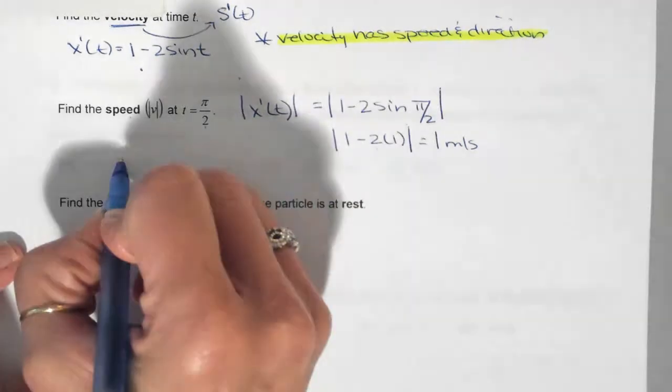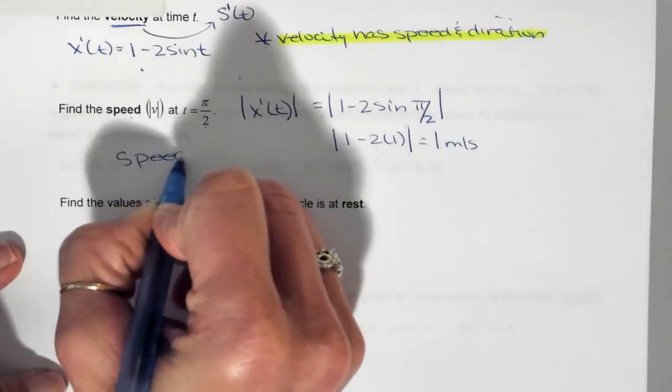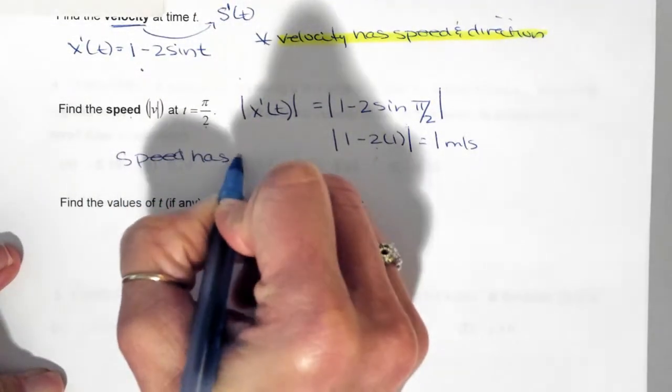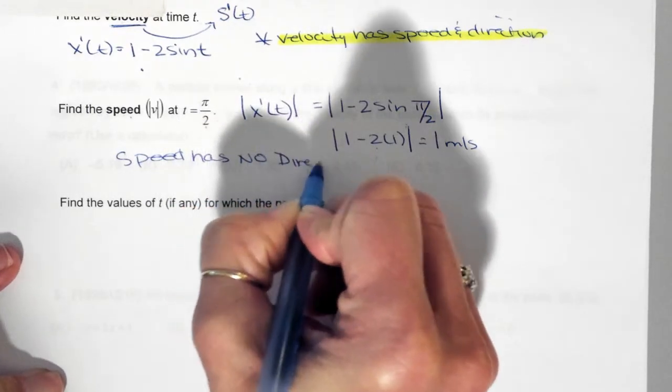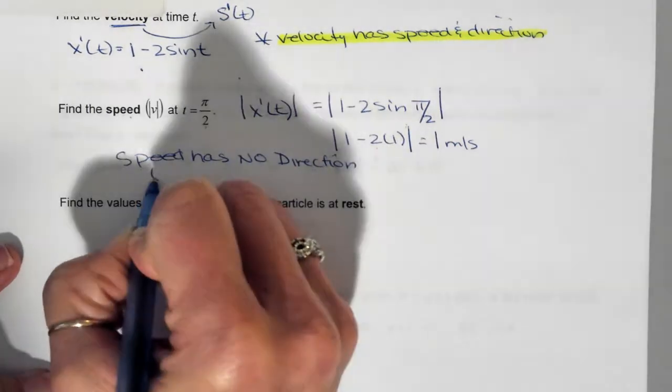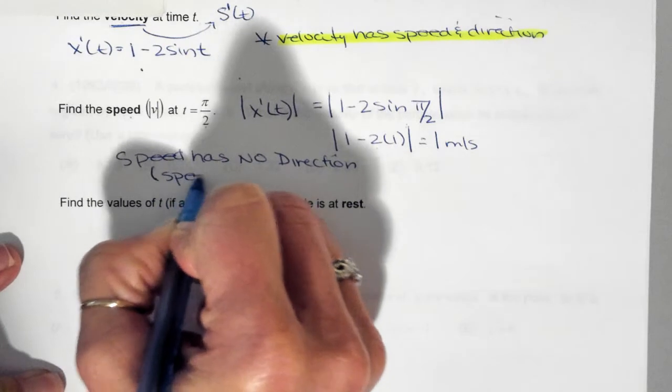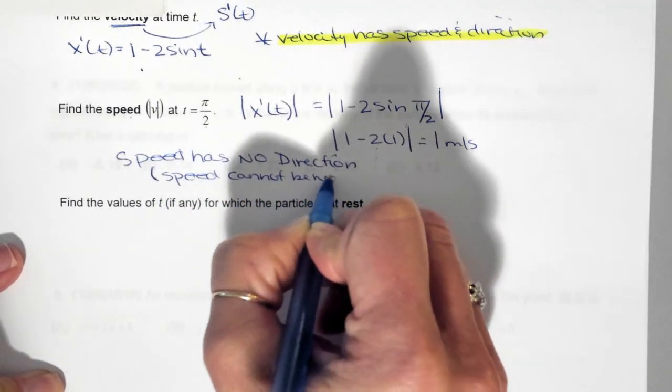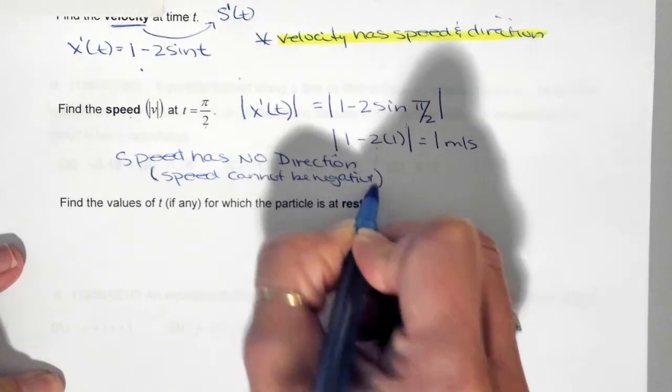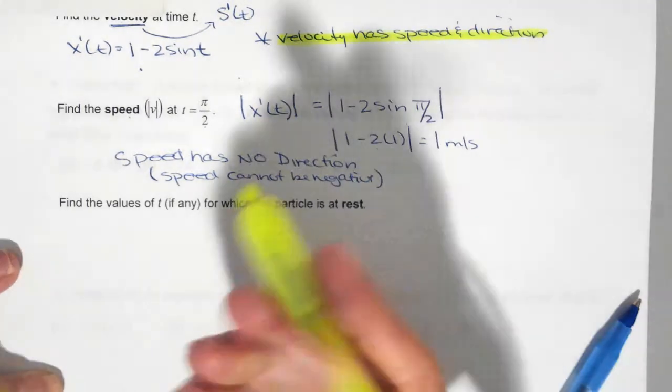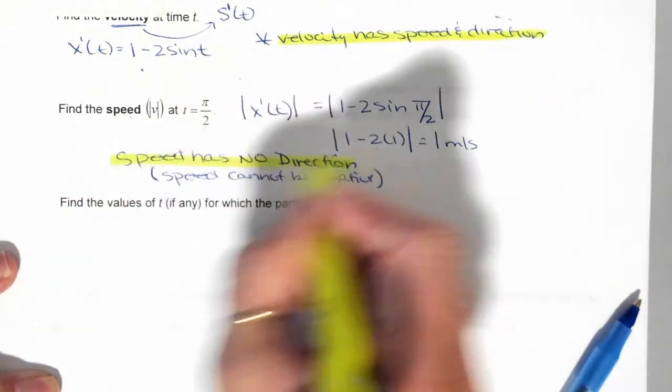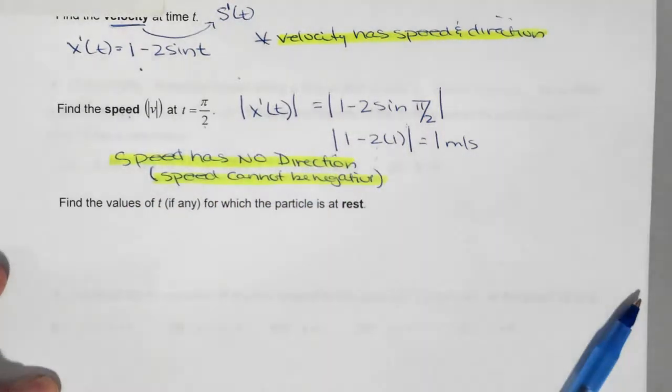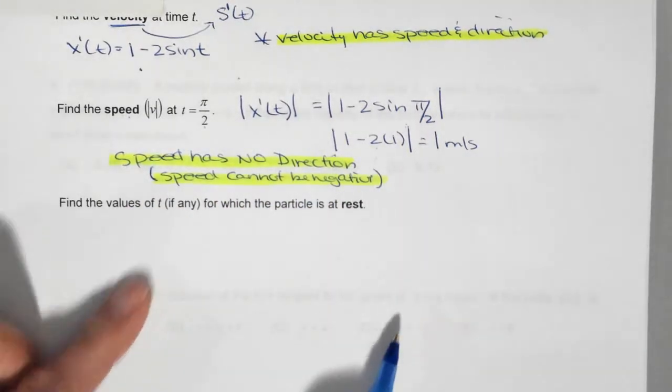This is important too because speed has no direction. And what that means in English is speed cannot be negative. Last piece and then I'm going to show you that thing in the calculator.